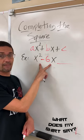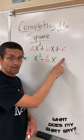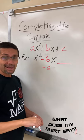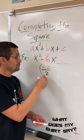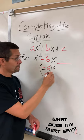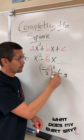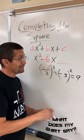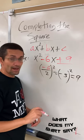My example, I have only two terms. I need to find the value of c. How? I bring my b value, negative 6, and I always divide by 2 to the second power. Negative 3 to the second power equals 9, and that's my c value.